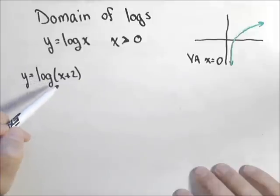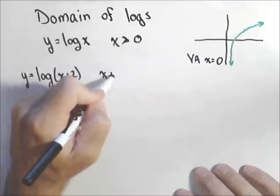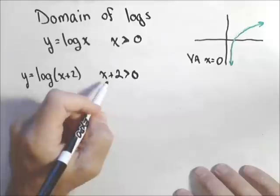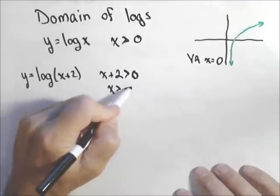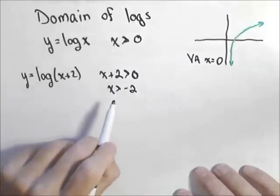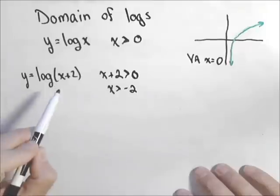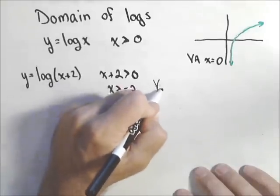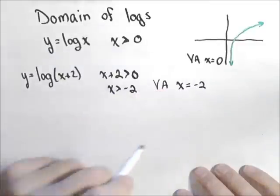Remember, we cannot take the log of zero or a negative number. So to find the domain, we set x plus two greater than zero and solve for x. That gives us x has to be greater than negative two. The place that makes the argument zero — in this case negative two — is our vertical asymptote. So our vertical asymptote is x equals negative two.